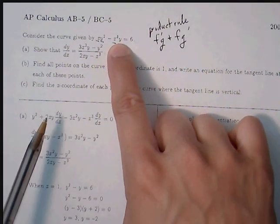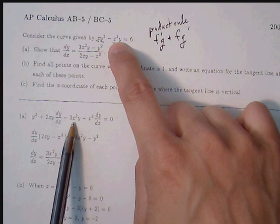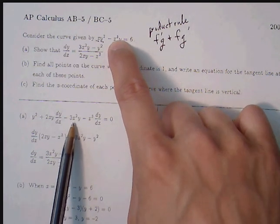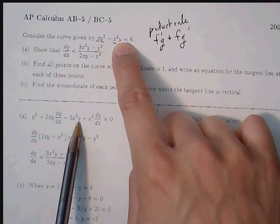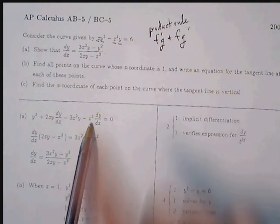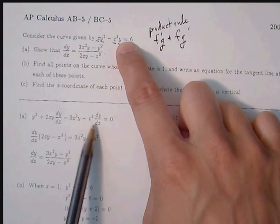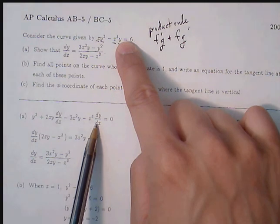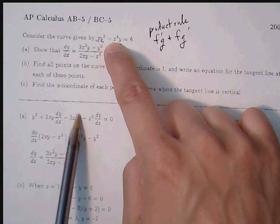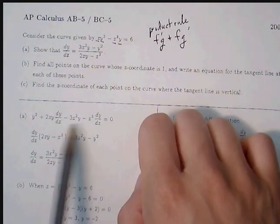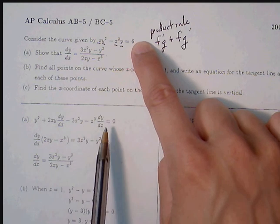Minus — now we take care of the second term, also using product rule. The derivative of x³ is 3x², and we keep y. Plus x³ times the derivative of y, which is 1 times dy/dx, since we must attach dy/dx. All of this equals 0. That negative gets distributed to both terms. Don't forget the 6 is a constant, so its derivative is 0.